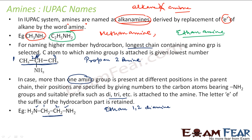Please note: in this case the E of the hydrocarbon part is retained. So it is ethane-1,2-diamine. When you have more than one amino group, the E from the parent alkane is kept.